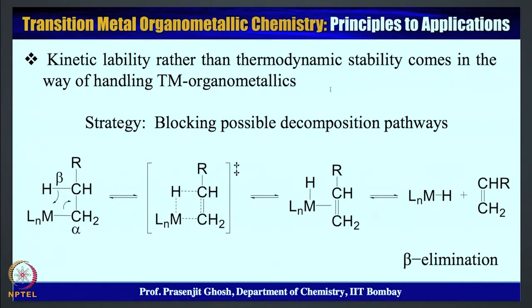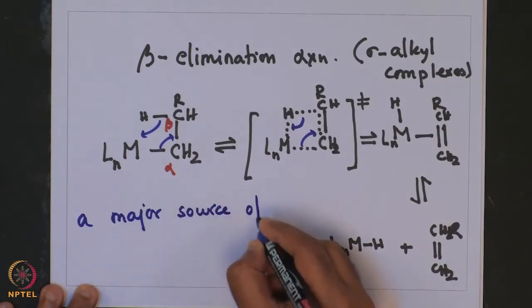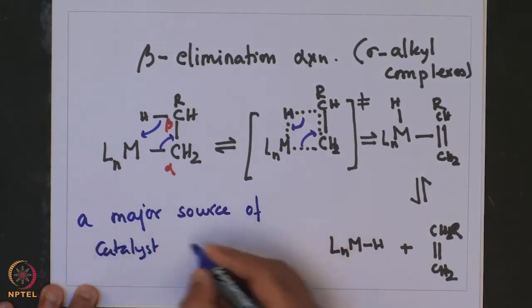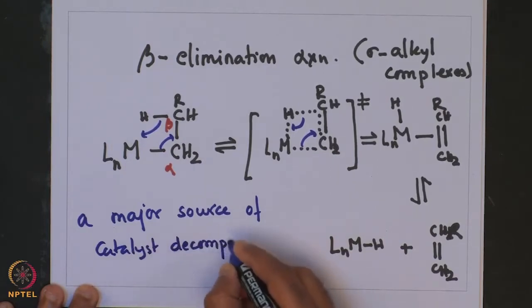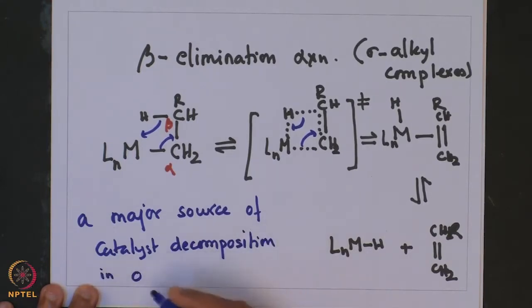This beta hydride elimination is also part of catalyst decomposition in many important transition metal catalyzed reactions. For example, it is a major decomposition pathway for olefin polymerization reactions catalyzed by transition metals that proceed via a coordination-insertion pathway.